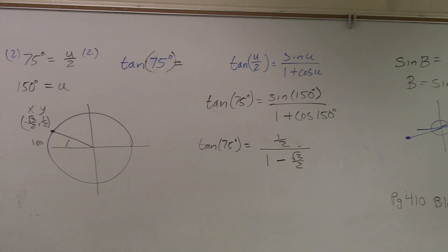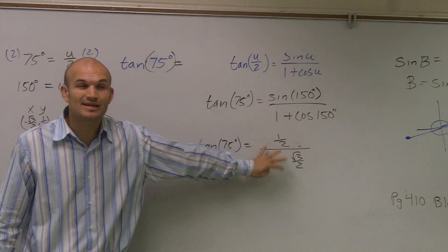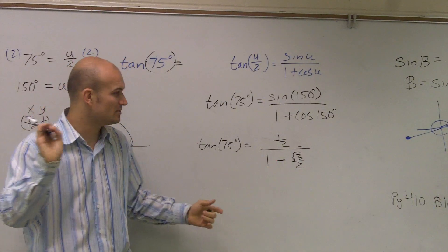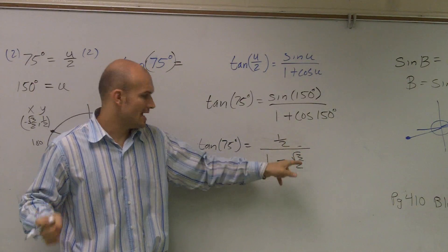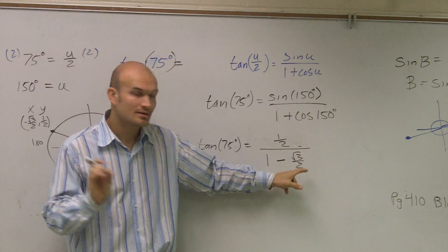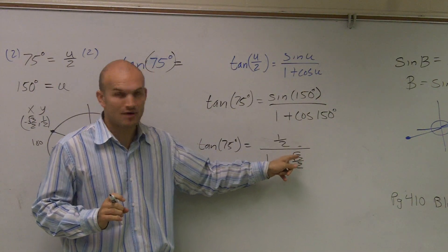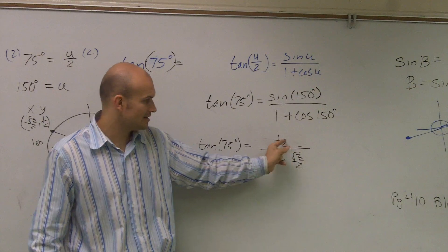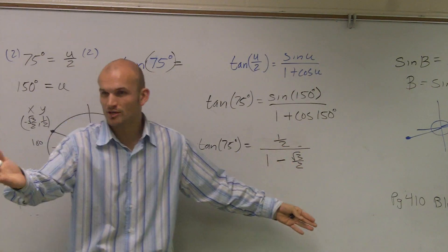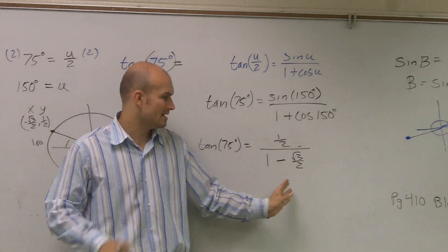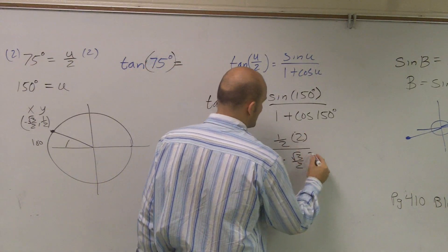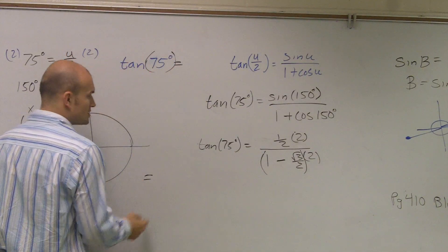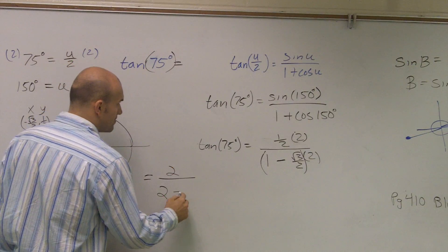So now we have a couple of these fractions. How do we get the 2 off the denominator? We need to multiply everything by the reciprocal. The problem with the reciprocal, though, is which reciprocal? If you multiply by the reciprocal, that means radical 3 is going to be on the bottom, which would cause some concern. Just to simplify things, since the denominators are the same, I'm going to multiply everything by 2. That way I can rationalize the denominator after. So I end up with 2 divided by 2 minus radical 3.